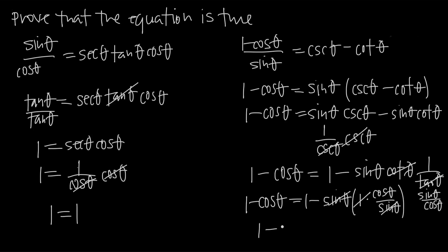So what we see is 1 minus cosine of theta is equal to 1 minus cosine of theta. We could simplify further and say 1 equals 1, but we've clearly proven that 1 minus cosine theta is always going to equal 1 minus cosine theta. Getting the exact same value on the left-hand side and the right-hand side is what proves the equation is true, and as you can see, we were able to do that with both examples.